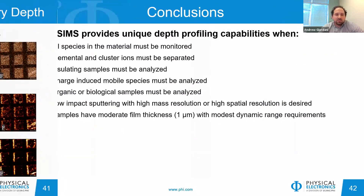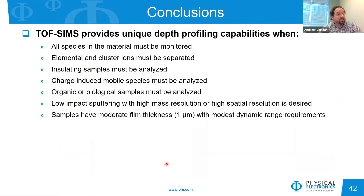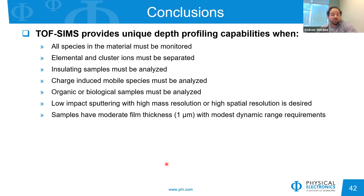In conclusion, TOF-SIMS provides unique depth profiling capabilities when you want to monitor all species or don't know beforehand what species are present — making it more of a survey approach. It offers high mass resolution to separate elemental from cluster species, easy charge compensation via pulsed ion beams for insulating samples, accurate profiling of mobile ions prone to charge-induced diffusion, and suitability for organic and biological samples. For low-impact sputtering with high depth resolution combined with high mass or spatial resolution, TOF-SIMS depth profiling has a clear advantage. However, samples should have moderate film thicknesses — roughly a micron — and modest dynamic range requirements; for ultimate detection limits or very thick films, other SIMS instruments would be better suited.